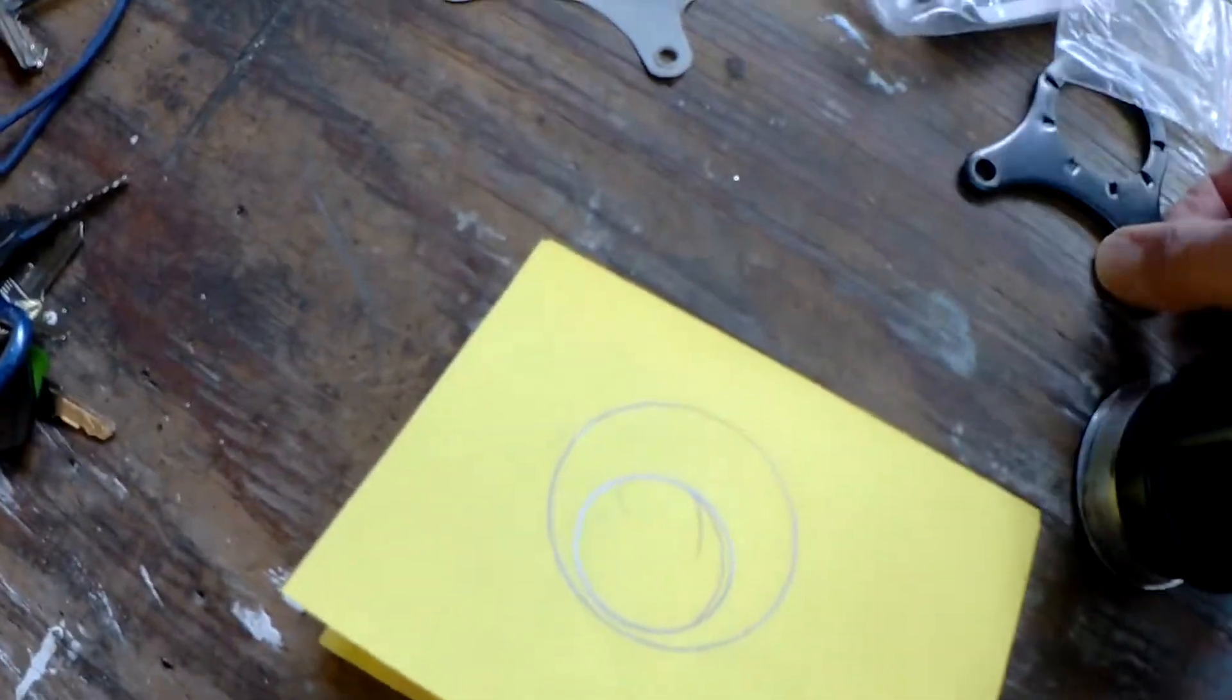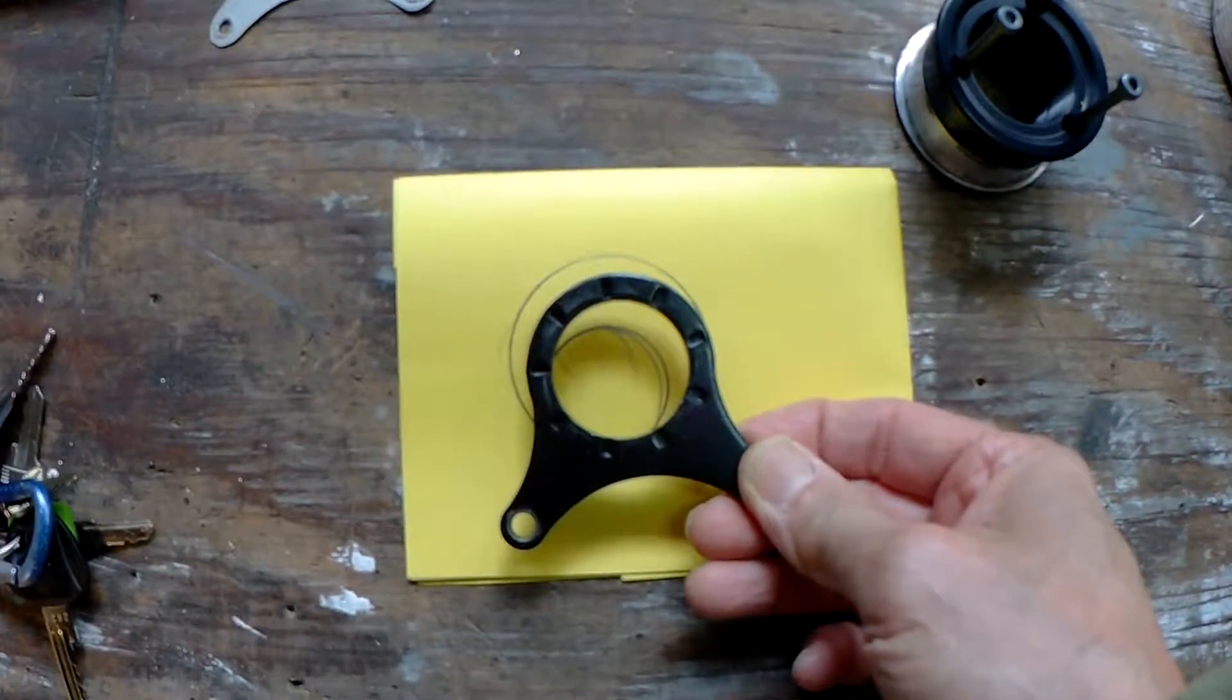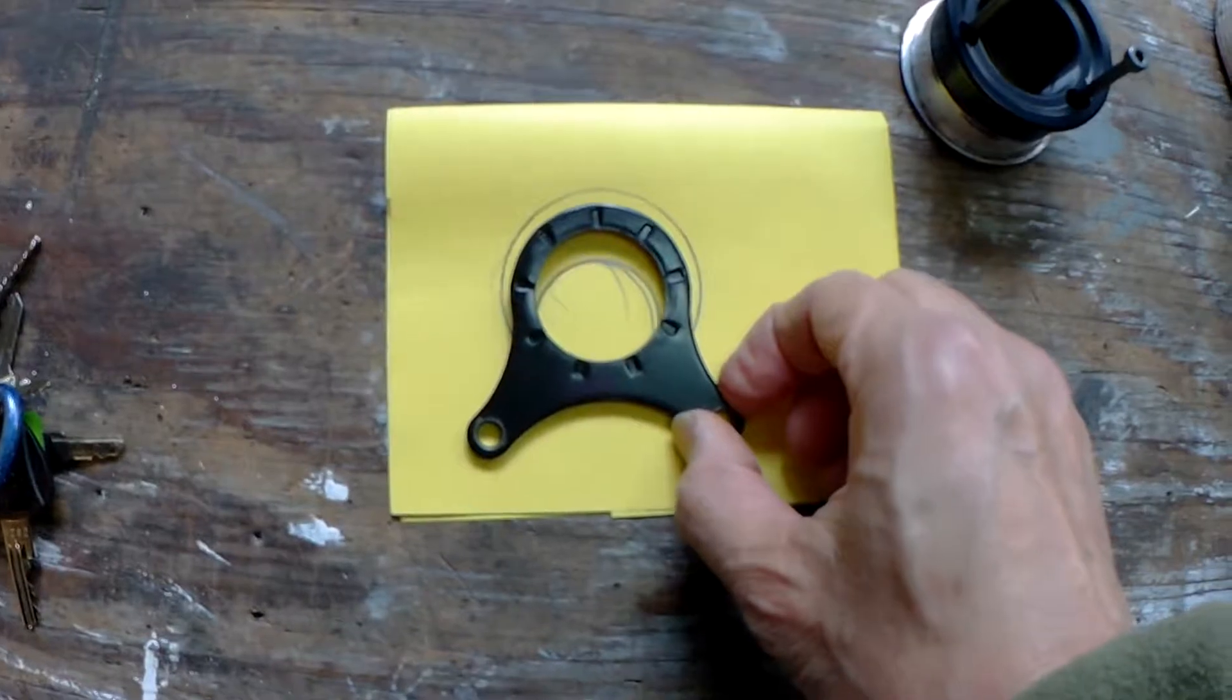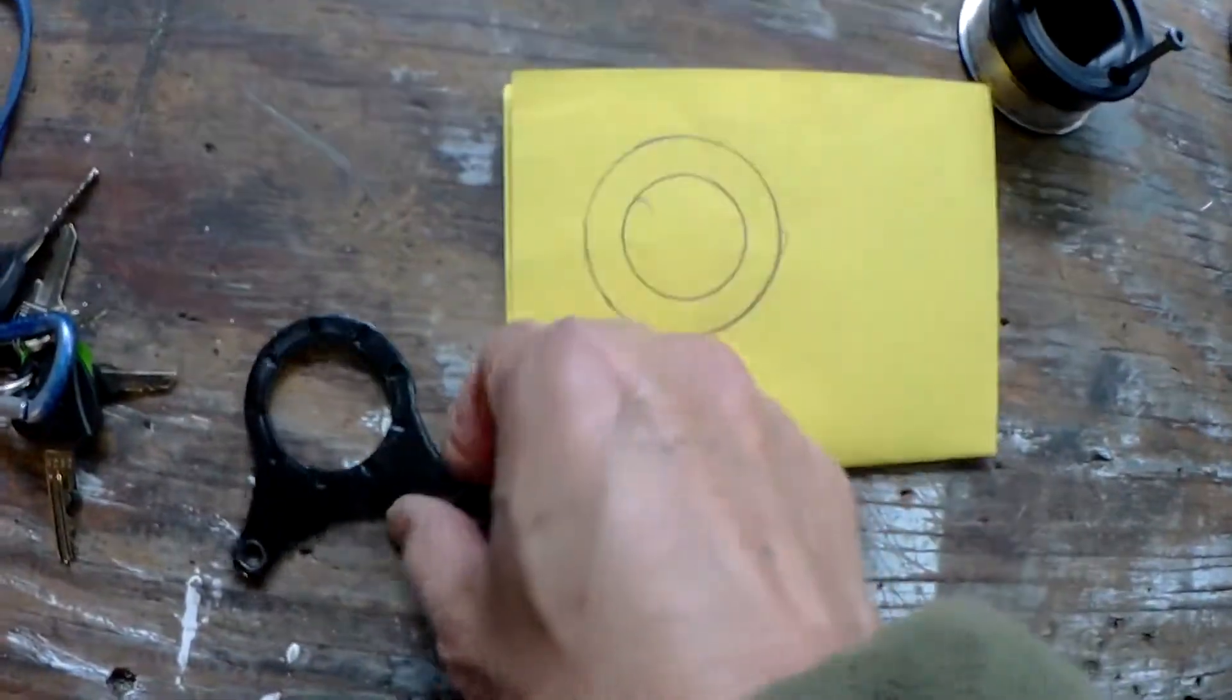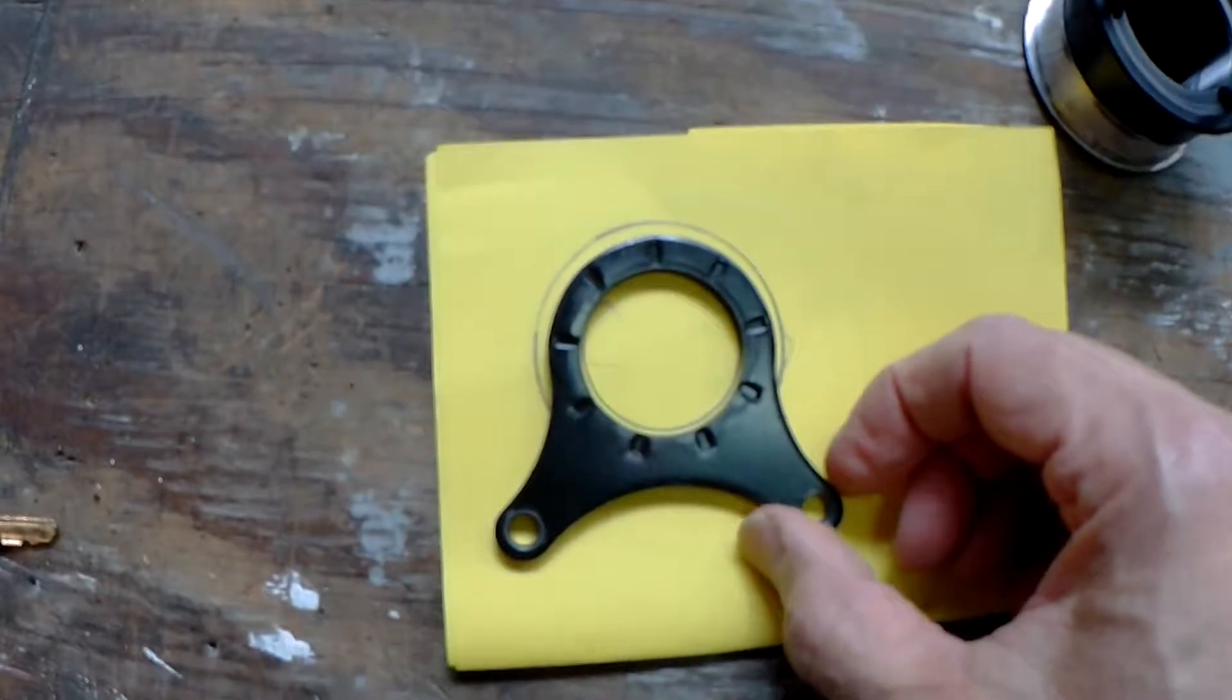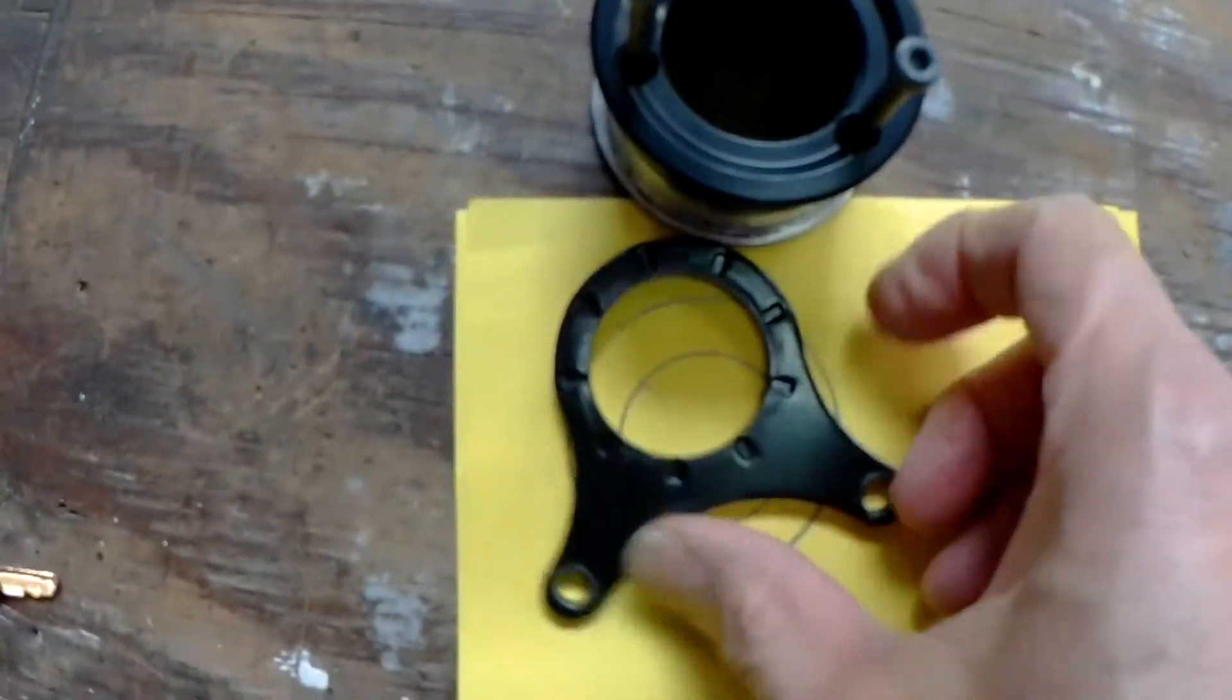Another thing, another problem you'll run into is that this bracket that comes with the motor would not fit perfectly on your adapted bracket. So let's say this is original, it would fit fine if it was shaped like this.